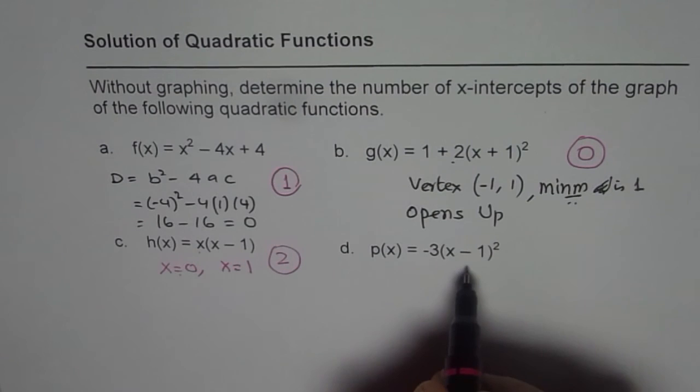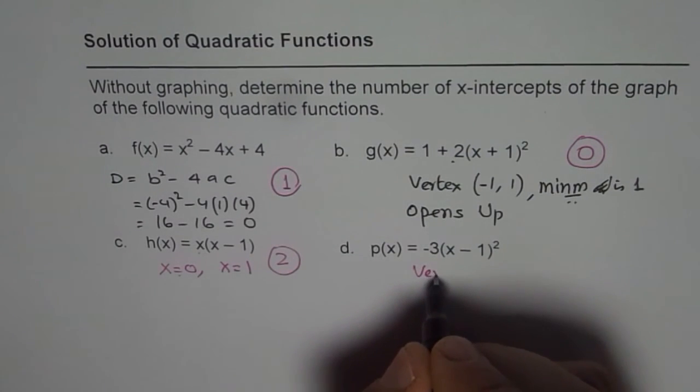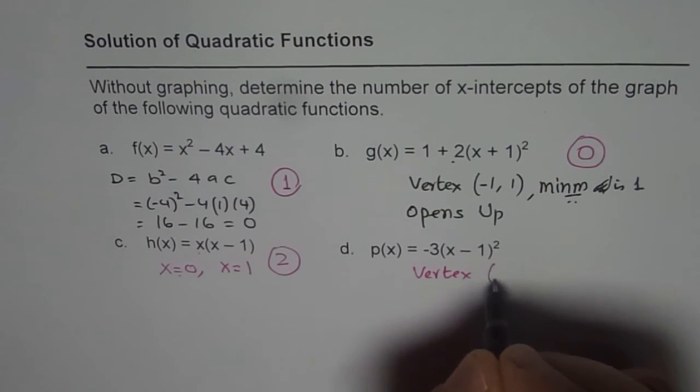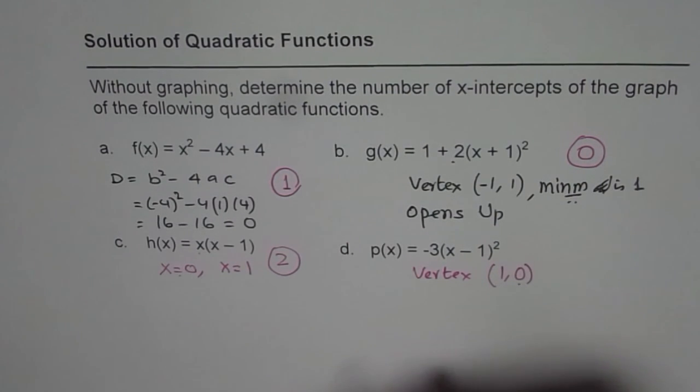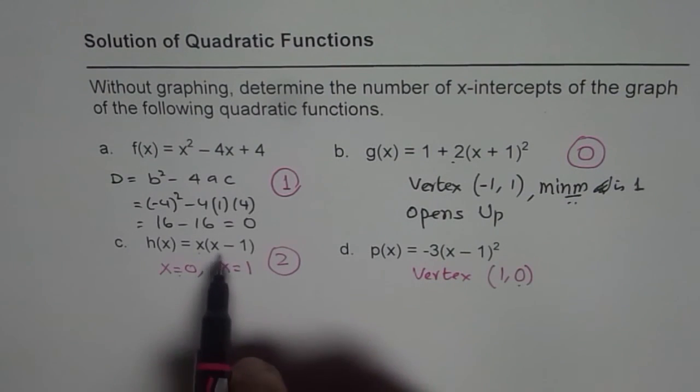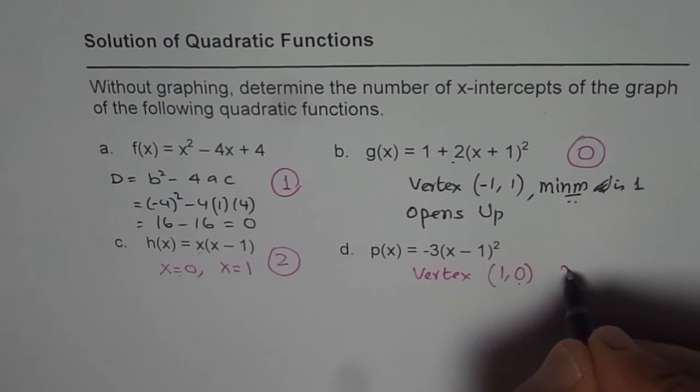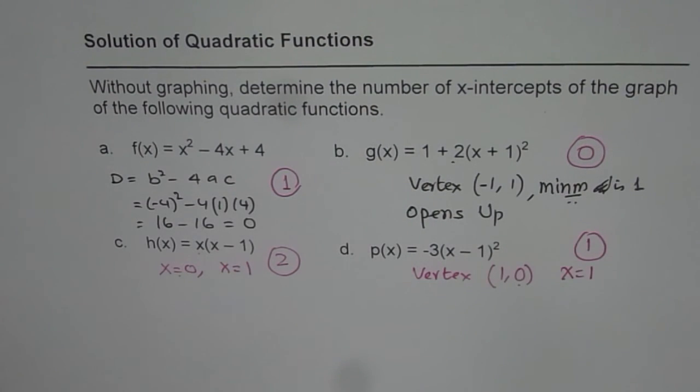And in the third one also, well, you can see the vertex is at which point? The vertex is at (1, 0). That means it is on the x-axis itself. Or if you can use it as a factor form, (x minus 1) times (x minus 1), then also you know at x equals 1 we have an x-intercept. And the answer is just 1 in this case also.